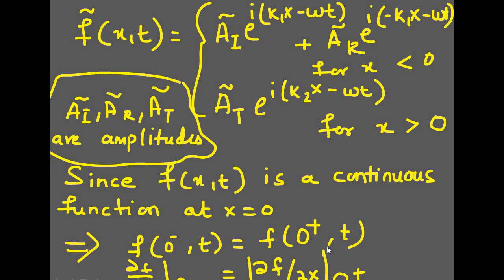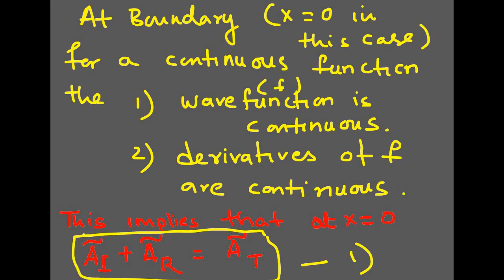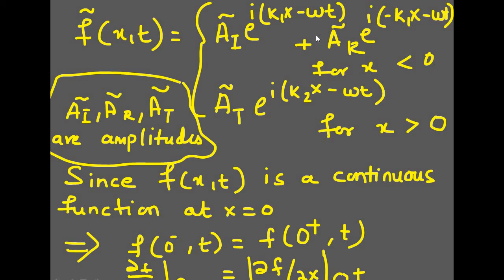We write 0-minus and 0-plus for the left and right of 0. Similarly, the derivative of the wave function is also continuous at 0-minus and 0-plus. So at x equal to 0, for a continuous function, both the wave function and its derivatives are continuous — a known postulate from quantum mechanics. This implies that at x equal to 0, the left-hand side equals the right-hand side.